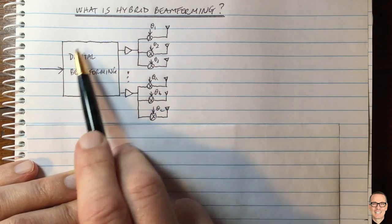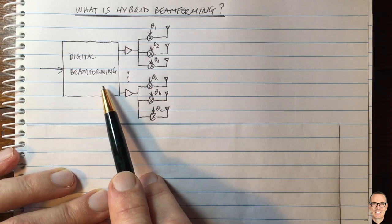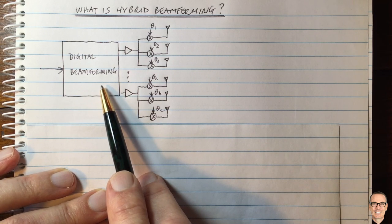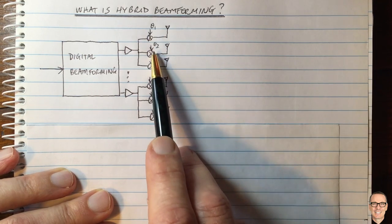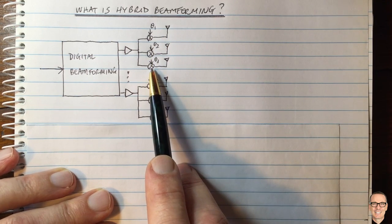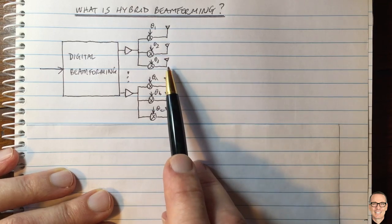The digital beamforming is implemented as a matrix multiplication in the digital domain. The analog beamforming is implemented by phase offsets in analog circuitry just before the antennas.